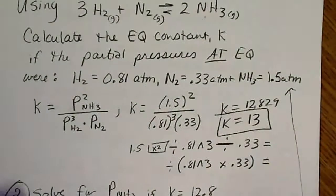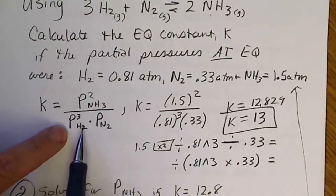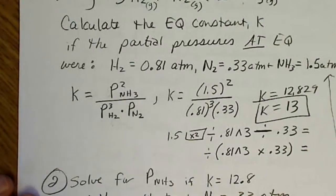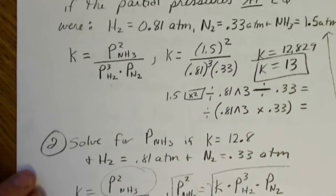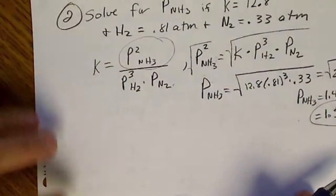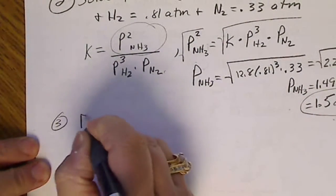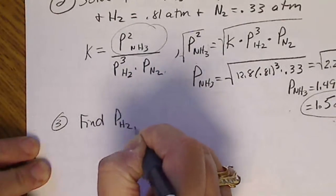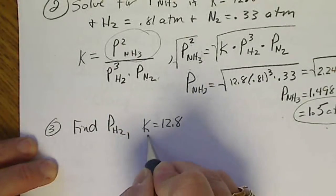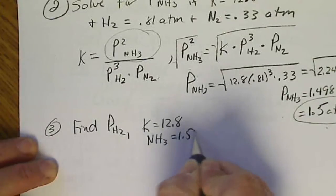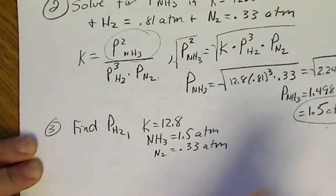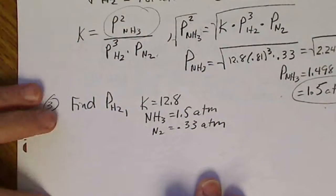So just like any algebraic problem, we can rearrange the equation and solve for any unknown. If what we're looking for is in the denominator, we just have to be careful with the algebra. So we could solve this now for hydrogen. Let's use the same problem and find the pressure of hydrogen. And that means we know that K is 12.8, NH3 is 1.5 atmospheres, and N2 is still 0.33 atmospheres.